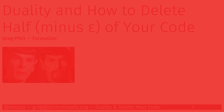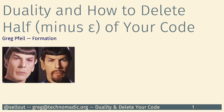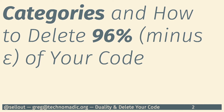All right, so I'm going to start with an apology, because this is the title of the talk that you've all seen, although the actual content of the talk is a little different. It's 'Categories and How to Delete 96% Minus Epsilon of Your Code.' So hopefully a little bit more ambitious, but it would be nice to be able to delete 96% of your code. I feel like that would be really helpful.